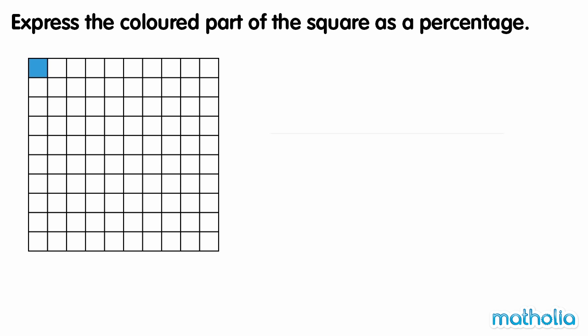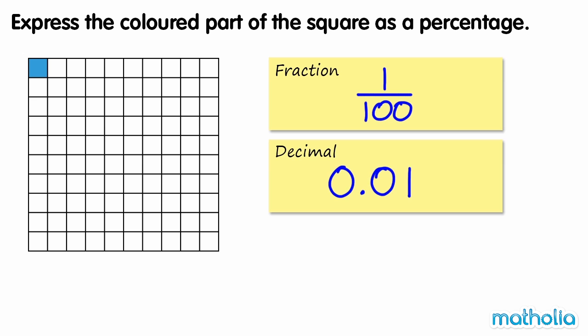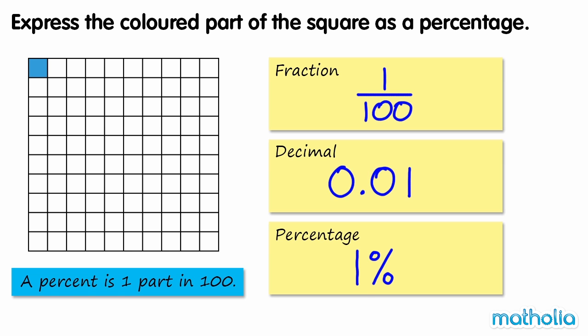Express the coloured part of the square as a percentage. Let's start by expressing the coloured part as a fraction. The square is divided into 100 equal parts, and one part is coloured. We can show this as the fraction 1/100th. 1/100th can also be written as the decimal 0.01. A percent is one part in 100, so 1% of the square is coloured.